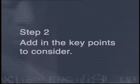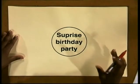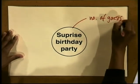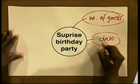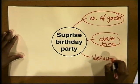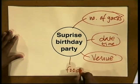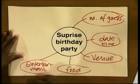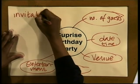We now need to include all the other information required to help us plan a perfect party. This is Step 2: add in the key points to consider. Everything you think is important should be included on your map — the number of guests, the date and time, the venue, what food you're going to serve, the kind of entertainment, and lastly the invitations. Now that you've thought of all the key points and written them down in the mind map, how are you going to proceed to make sure that every aspect of the party is organised properly?